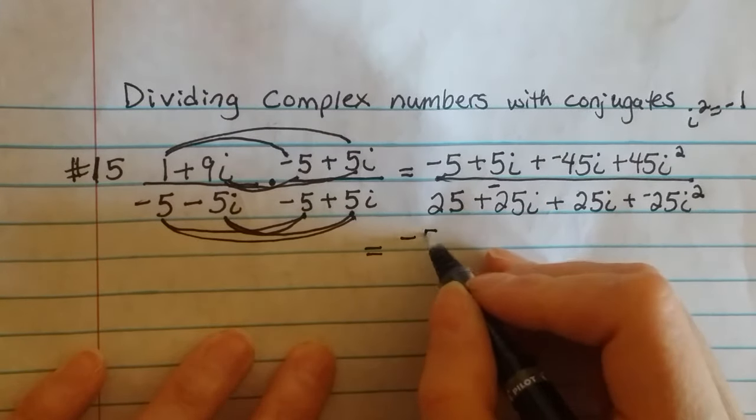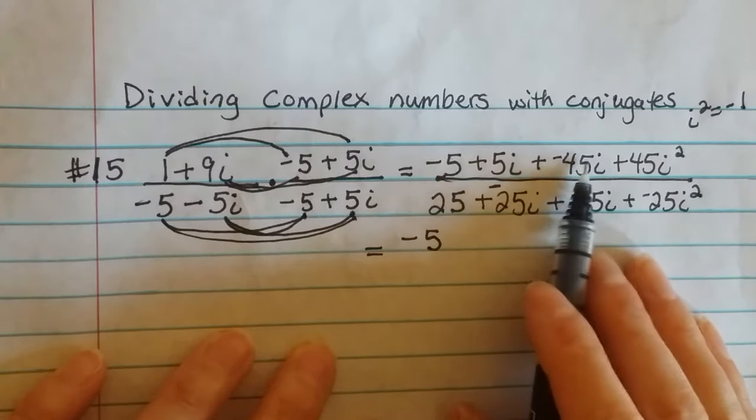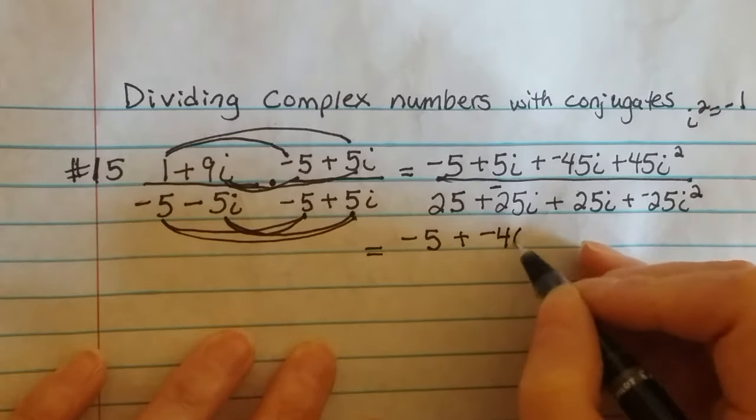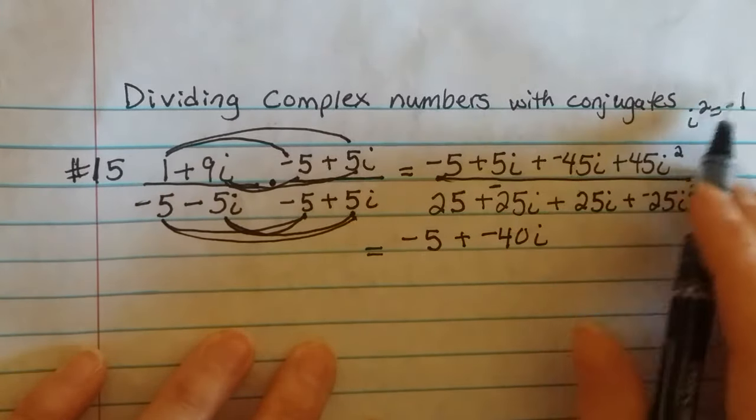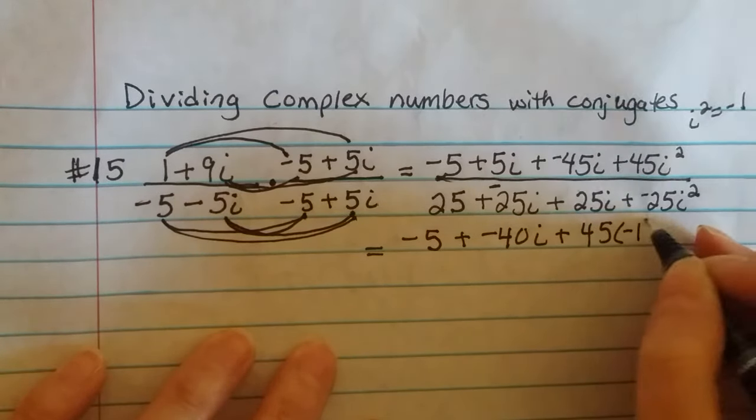Okay, so this is going to be -5. I can combine both of these. So 5i plus -45i, that would be -40i. And then I'm going to plug -1 in for that. So that would be 45 times -1.